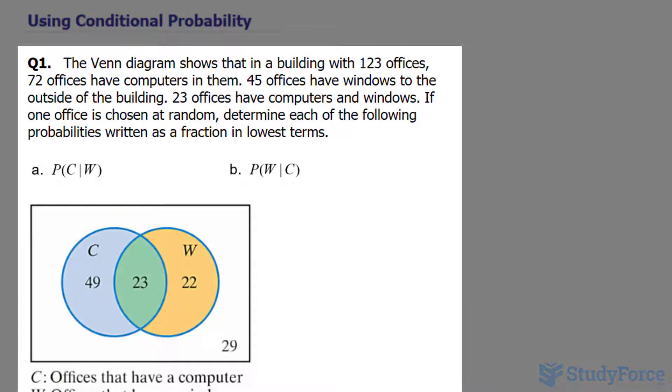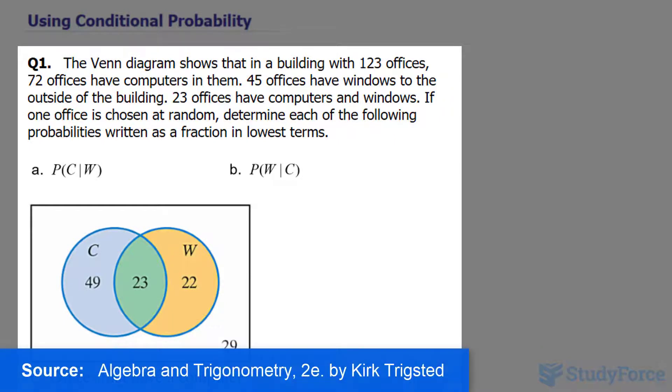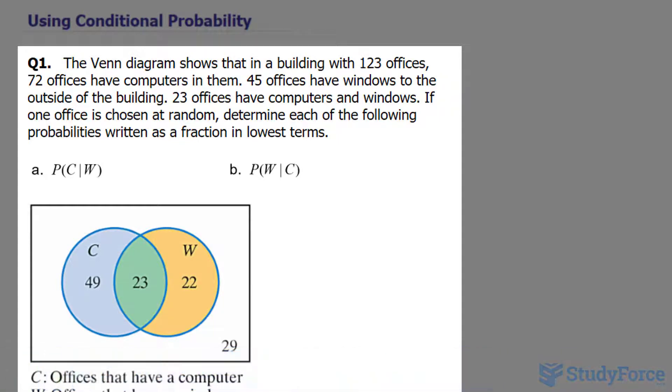The Venn diagram shows that in a building with 123 offices, 72 offices have computers in them, 45 offices have windows to the outside of the building, and 23 offices have computers and windows.